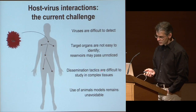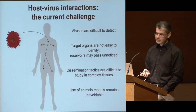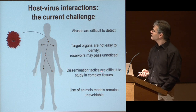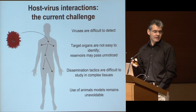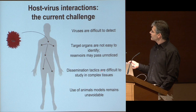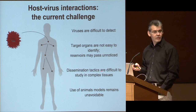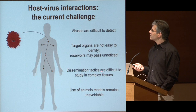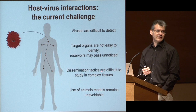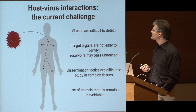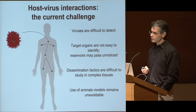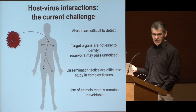My current work is mostly on viral infections, and one of the problems we have with viruses is that they are difficult to detect more than other pathogens. It's not easy to find what the targets are, and very often there are reservoirs which we don't know. The way that viruses disseminate within a body and the way our body fights them are very difficult to understand. This happens in complex tissues; tissue culture gives only very partial information, and that's where we really need animal models.